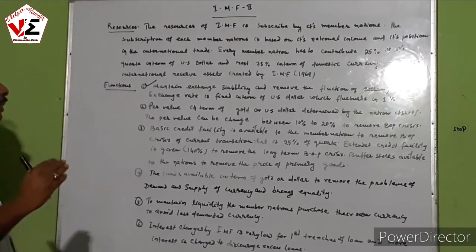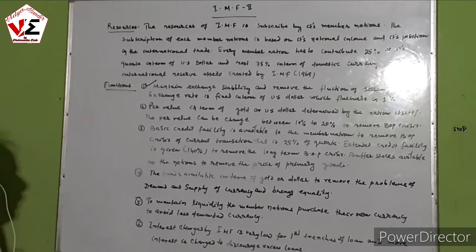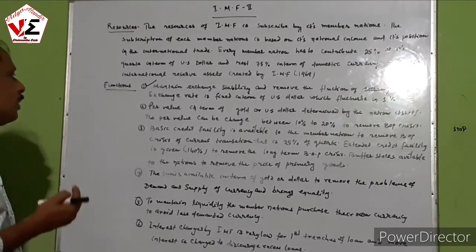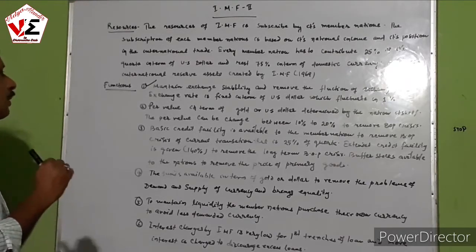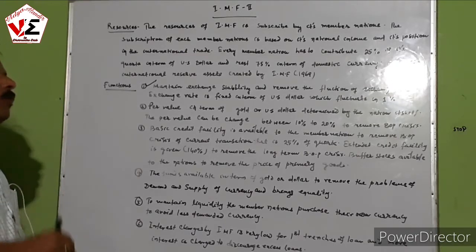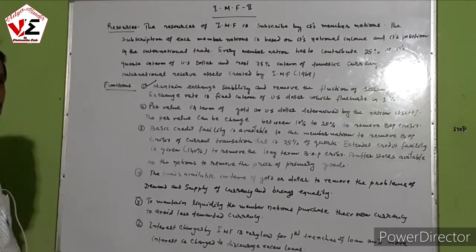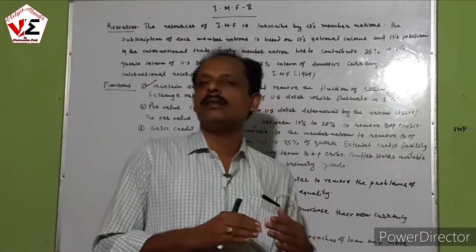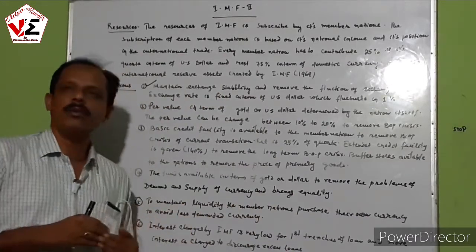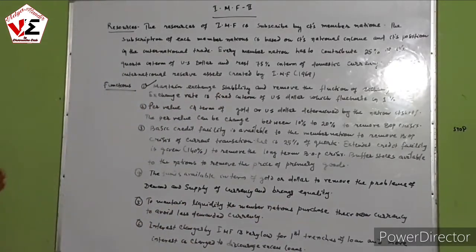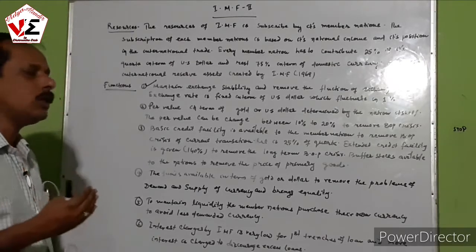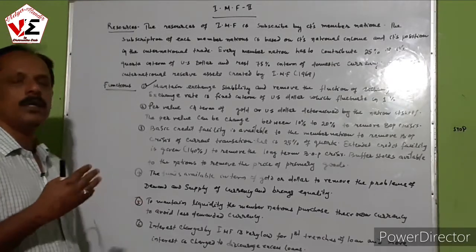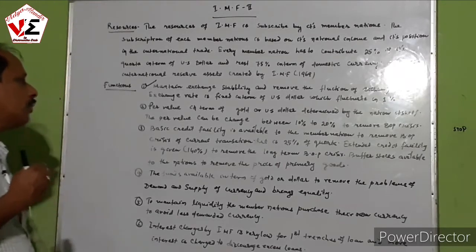Par value is determined according to the balance of payments situation. Basic credit facilities are available to member nations to remove the balance of payment crisis. The IMF provides basic credit to remove the current balance of payment crisis — whether there is a deficit in balance of payments — by financing loans to the nation so that trade and commercial business can develop and the crisis can be removed.